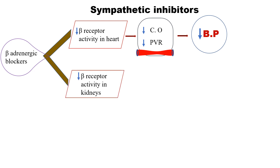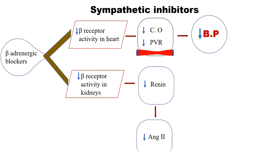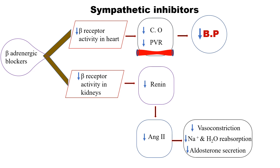Beta adrenergic blockers also decrease the activity of beta receptors in the kidneys, leading to decreased activity of renin and reduced actions of angiotensin 2. This leads to inhibition of vasoconstriction, reduction of sodium and water reabsorption, and decreased release of aldosterone from the adrenal cortex, finally lowering plasma volume and decreasing blood pressure. Hence, beta adrenergic blockers can be used to treat hypertension.